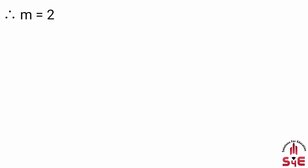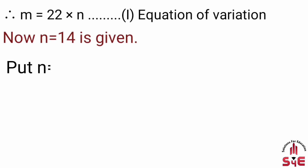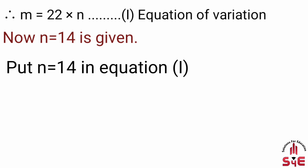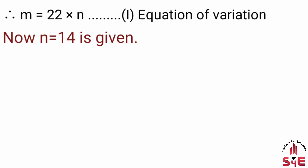k ki value 22 rakhne par hume equation milti hai: m is equal to 22 into n — equation number 1. Now n is equal to 14 is given, so put n = 14 in equation 1. We get m is equal to 22 into 14, so finally m is equal to 308.